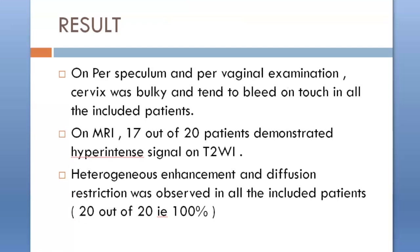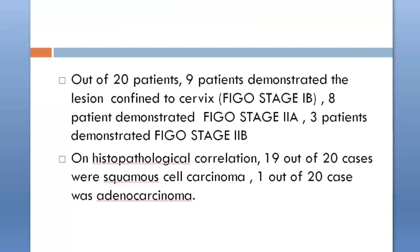Heterogeneous enhancement and diffusion restriction was observed in all included patients. Out of 20 patients, 9 demonstrated the lesion confined to cervix, i.e., FIGO stage 1b; 8 patients demonstrated FIGO stage 2a; and 3 patients demonstrated FIGO stage 2b. On histopathological correlation, 19 out of 20 cases were squamous cell carcinoma and 1 was adenocarcinoma.